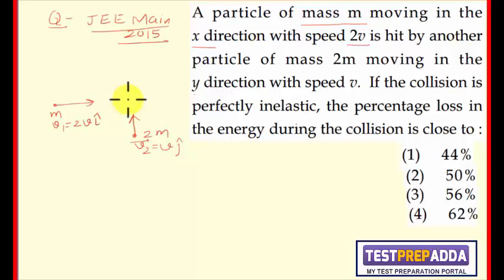The two particles collide, and since the collision is perfectly inelastic, they stick together with combined mass 3m and velocity vf. Since no external forces are present, I can find the final velocity using the law of conservation of momentum.